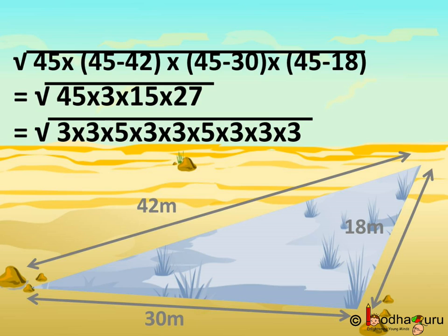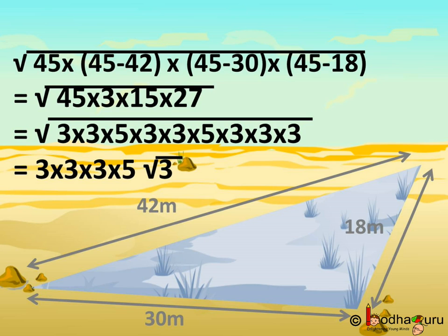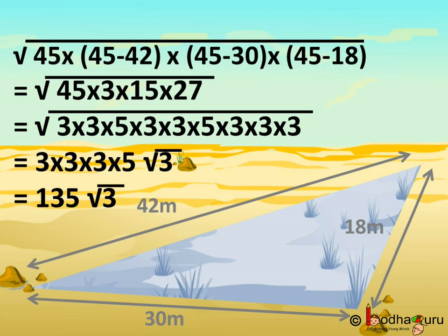Now, how to find the square root? We can break it into prime factors. So, 45 can be written as 3 multiplied by 3 multiplied by 5. 3 we write as is, 15 can be written as 3 multiplied by 5 and 27 can be written as 3 multiplied by 3 multiplied by 3. So, all these are prime factors. Here we have 6 3's under the square root. So, we can take out 3 3's outside the square root and we have 2 5's under the square root. So, one 5 can be taken out. So, only 3 is remaining inside the square root. This gives us area as 135 square root of 3.